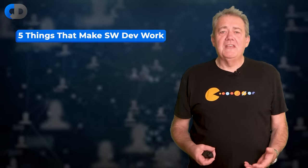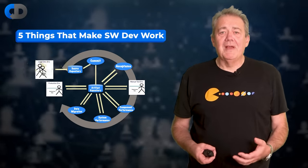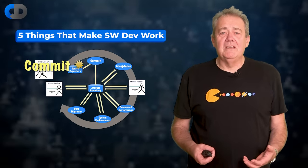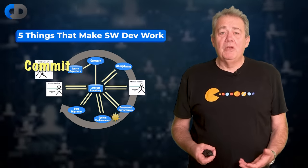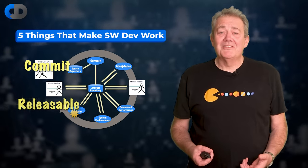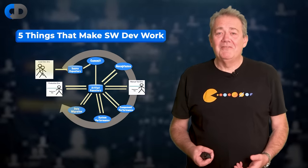What does it take to create and deliver great software efficiently into the hands of our users with a minimum of fuss and effort? I think there are five things, and those five things also happen to be the defining characteristics of a deployment pipeline — and that's not really a coincidence. So that's our topic for today.